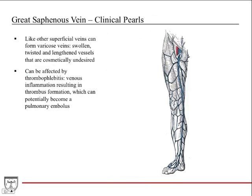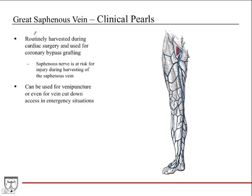Clinical pearls for the saphenous vein: like other superficial veins it can form varicose veins, which are swollen, twisted, and lengthened vessels that are cosmetically undesirable but generally not dangerous. Vascular surgeons frequently treat these. The saphenous vein can also be affected by thrombophlebitis — venous inflammation resulting in thrombus formation — which is serious because those thrombi can potentially become a pulmonary embolus.